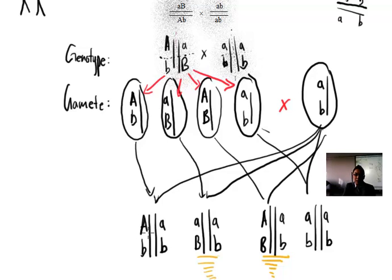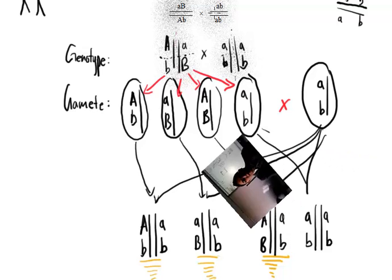And then finally over here, big A little b, little a little b, is that a new combination? And that does look like a new combination as well. So these three are called recombinants because they're new combinations that weren't present there. And that's where you get these terms basically.